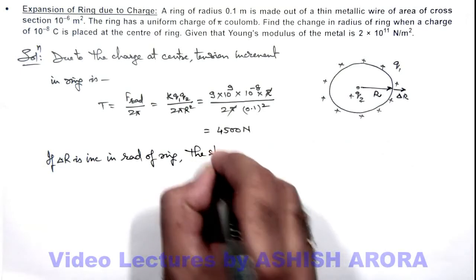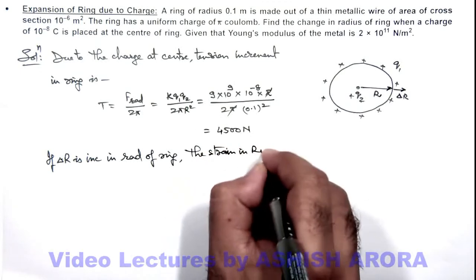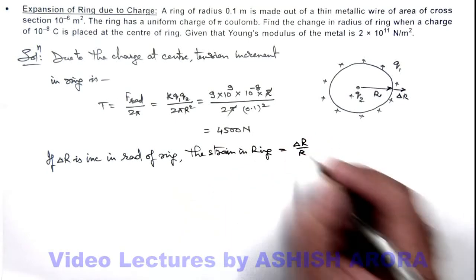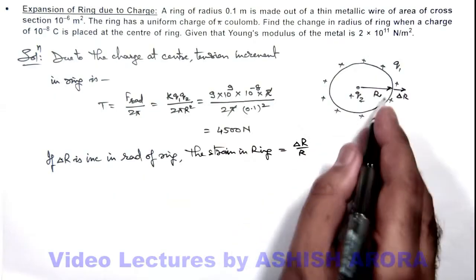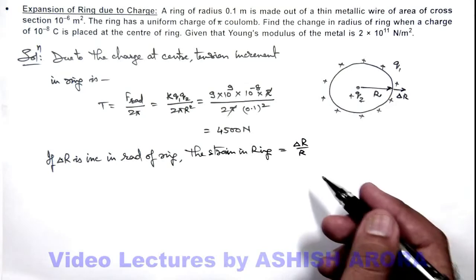If Δr is the increase in radius of ring, the strain in ring can be given as Δr by r. We can also use the increase in length of ring by the initial length, that will also result in Δr by r.